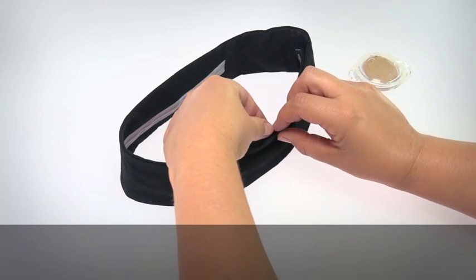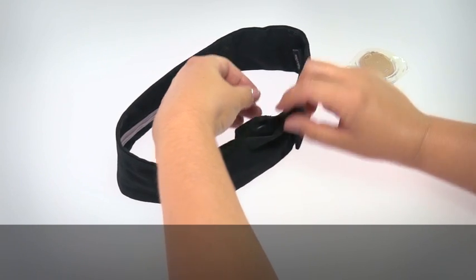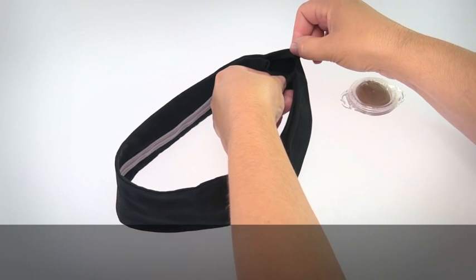The headband has two double pockets, one on each side, that hold the Kanso.